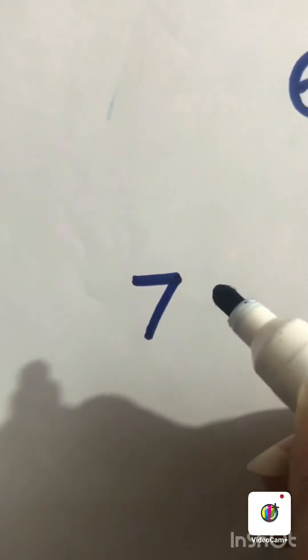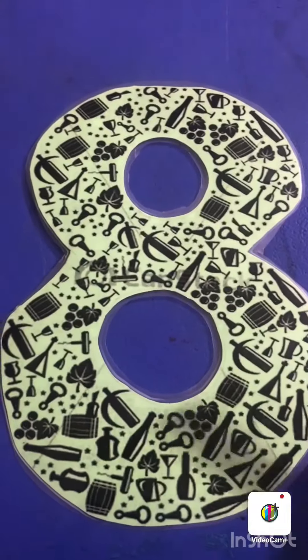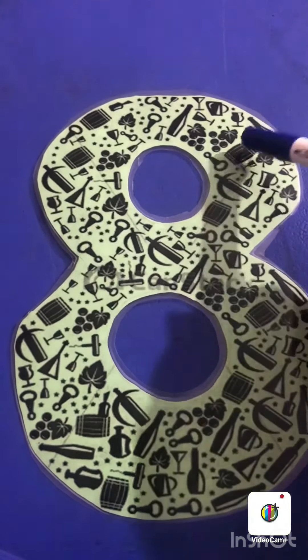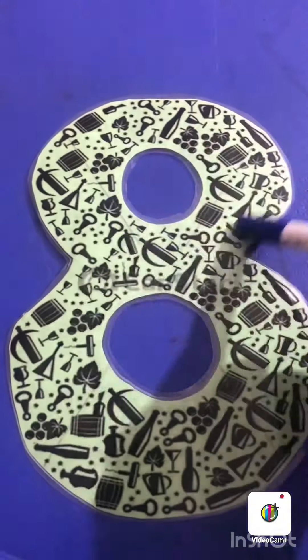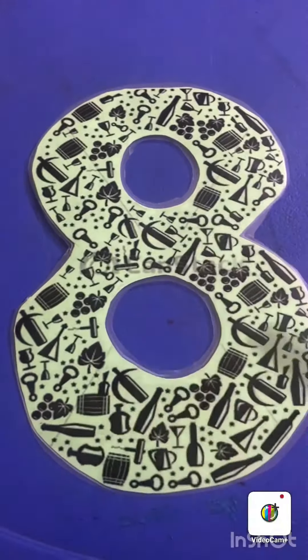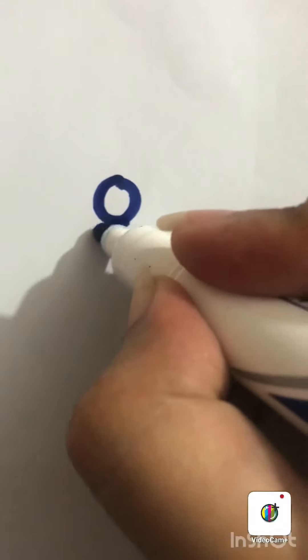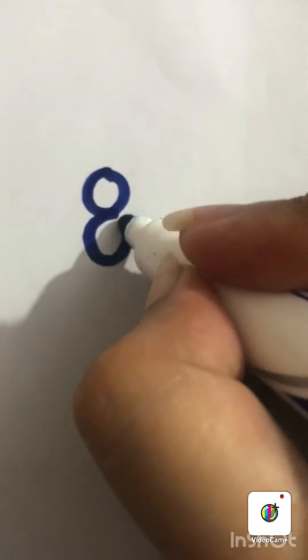This is number eight. Make a circle, another circle — number eight. Students, number eight is very easy to write. So students, hope you understand these numbers. Thank you.